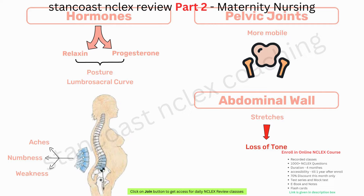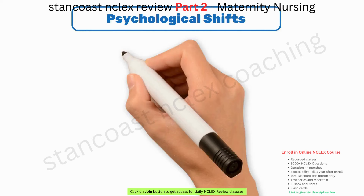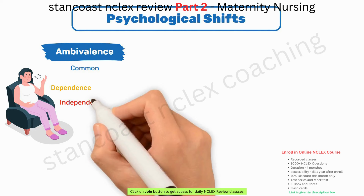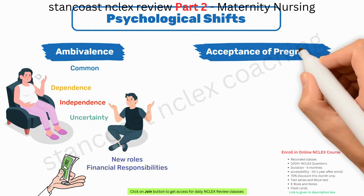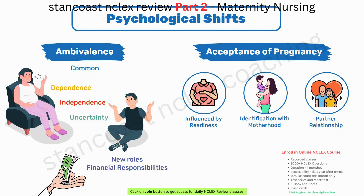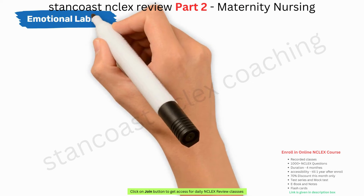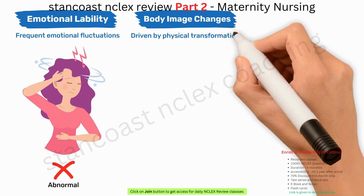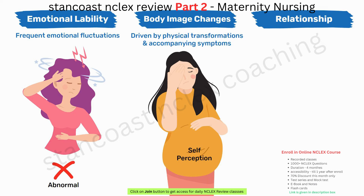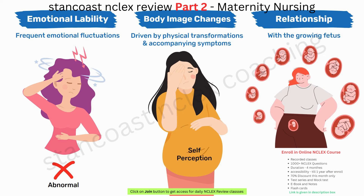Beyond the physical, pregnancy triggers psychological shifts. Early on, ambivalence is common, characterized by conflicting feelings of dependence and independence, as well as uncertainty about role changes. Partners may also experience ambivalence regarding their new roles and financial responsibilities. Acceptance of pregnancy varies, influenced by readiness, identification with motherhood, the partner relationship, the bond with the unborn infant, and birth preparation. Emotional lability, marked by frequent emotional fluctuations, is common but not necessarily abnormal. Body image changes can influence a woman's self-perception, and the relationship with the growing fetus evolves from acknowledging pregnancy to nurturing the developing baby and preparing for birth and parenthood.